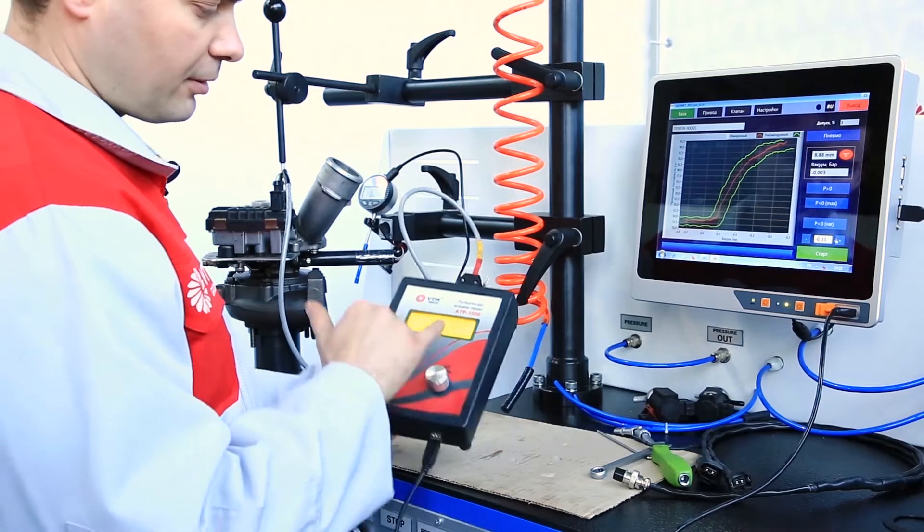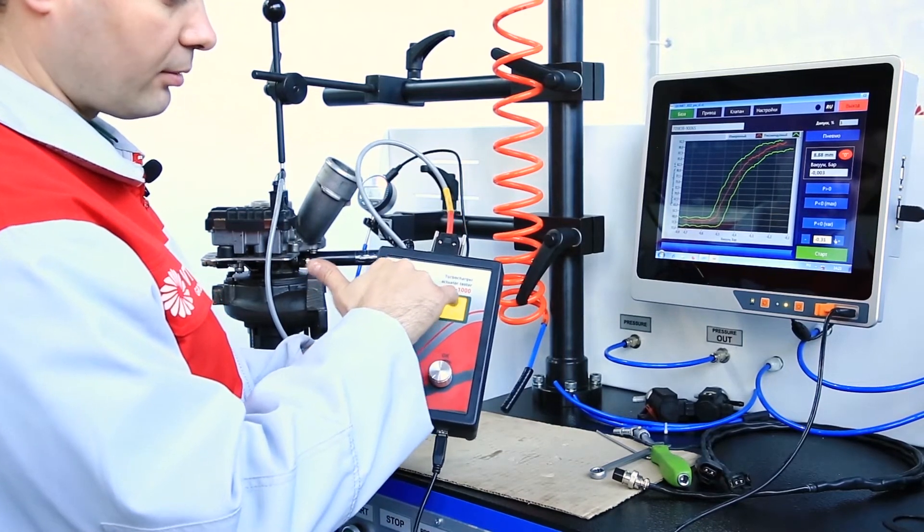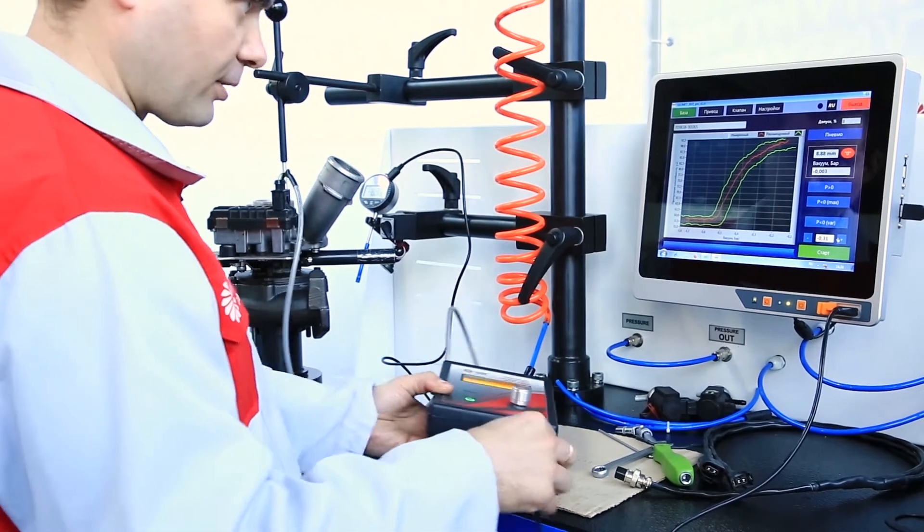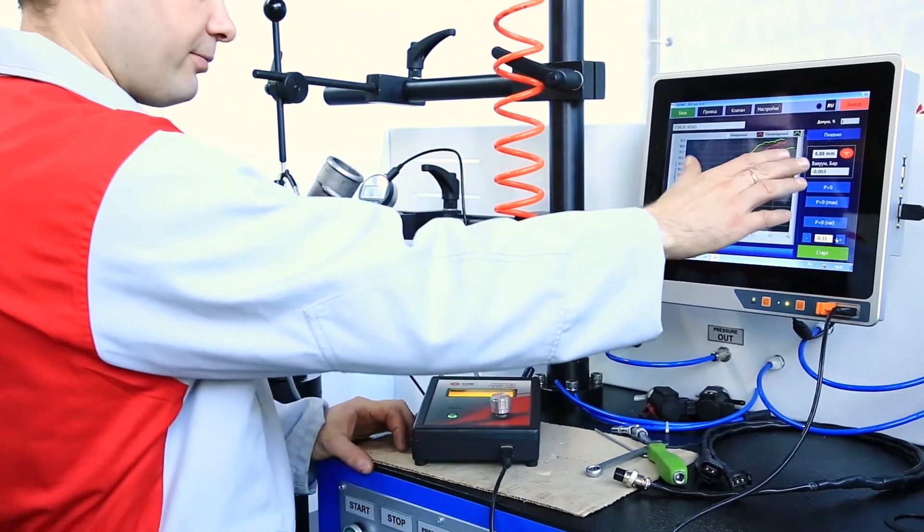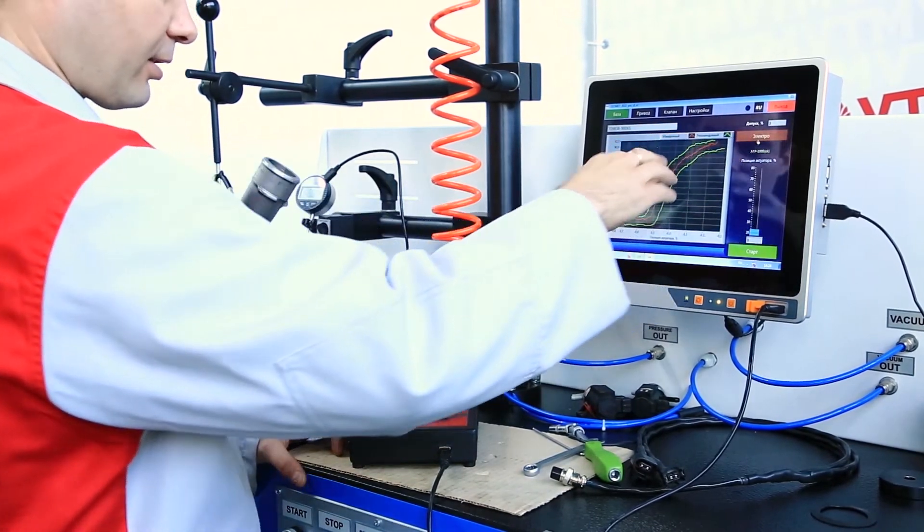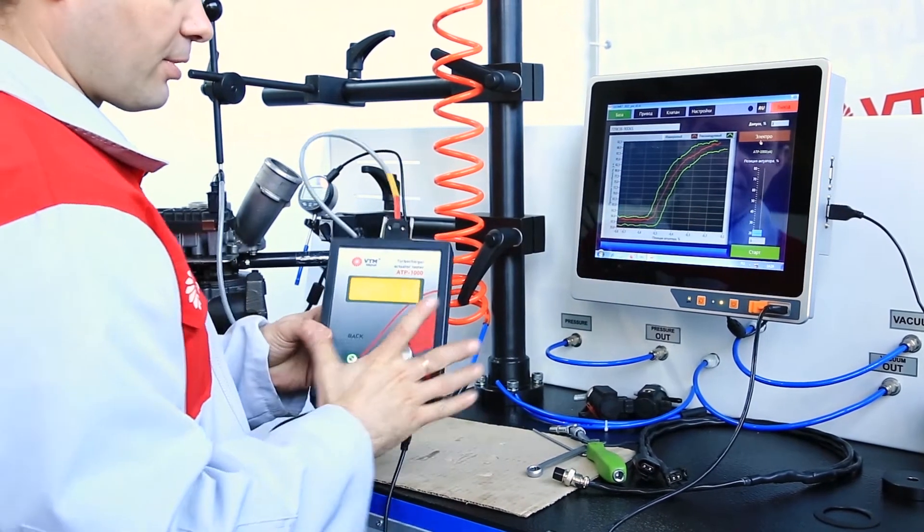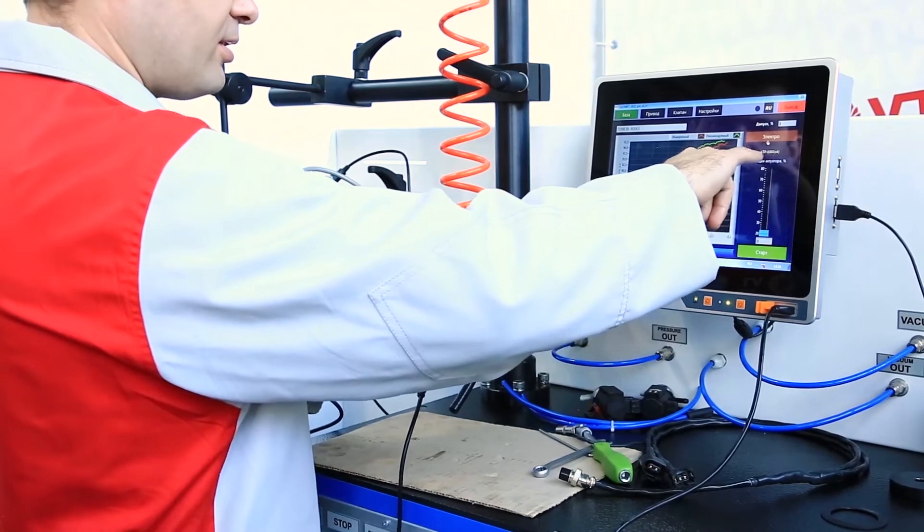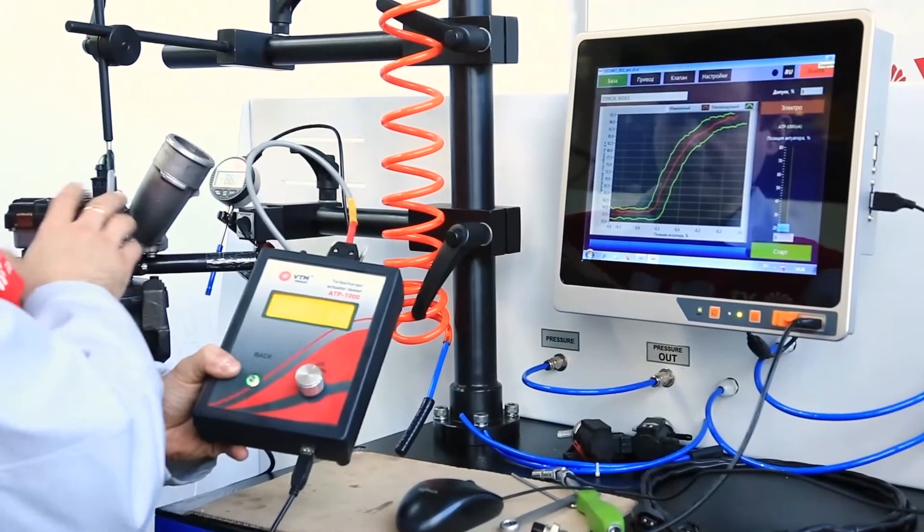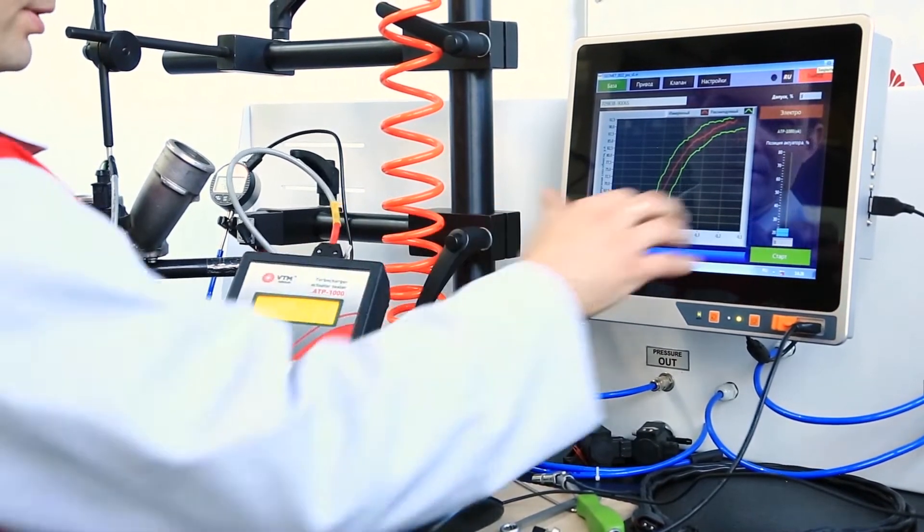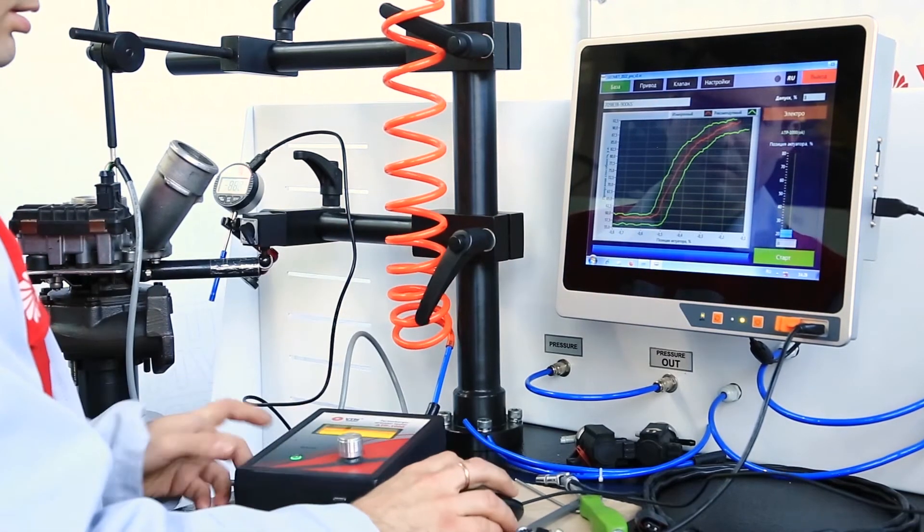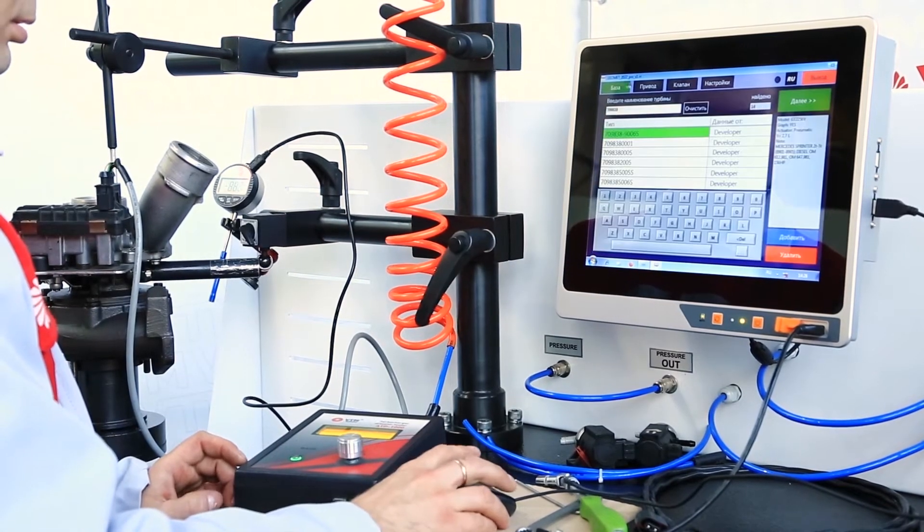The actuator is connected. We can see it on the PC. The icon corresponding to the device is connected to the computer. You also need to change the pneumatic button tab to the electro button. When the ATP thousand device is connected, the ATP thousand OK icon is written here. Our actuator is connected to the device. The device is connected to the computer. ATP thousand OK. Now we can choose our turbo from the database.